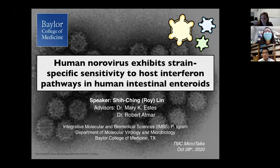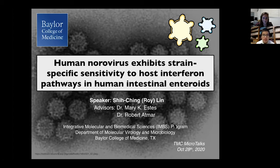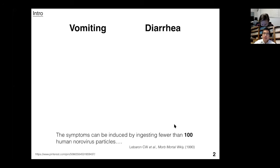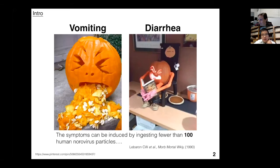Thank you for the introduction. Today I would like to talk about how we use human intestinal enteroids to study the innate immune response—especially the interferon pathway—induced by human norovirus infection. I'll recap some important details: human norovirus is a serious disease causing vomiting and diarrhea. You only need to ingest fewer than 100 human norovirus particles to get those symptoms, and they can last for several days.